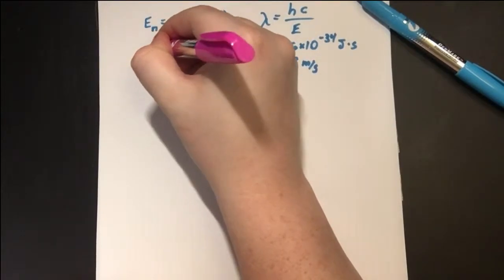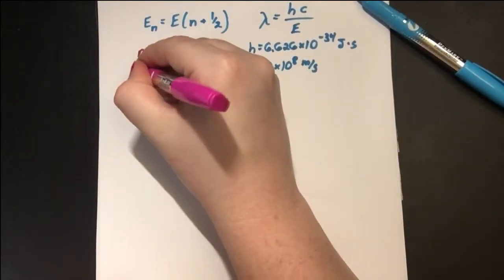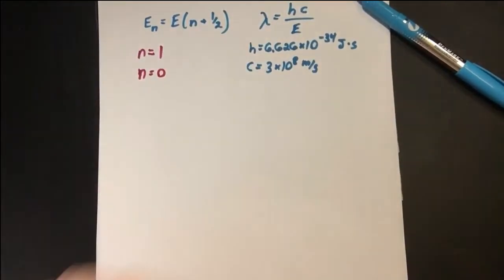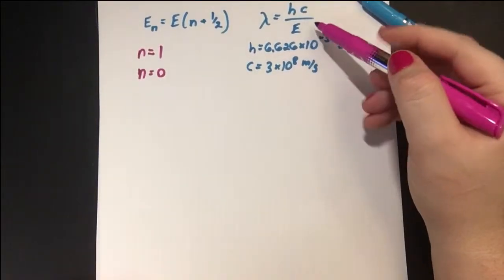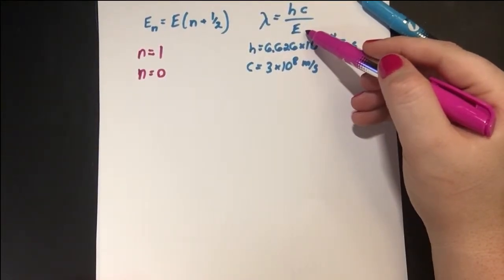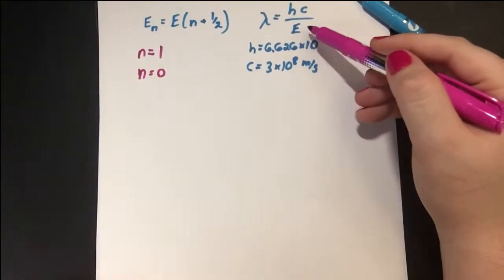So if we want to know what the wavelength is for a nitrogen molecule to decay from its first excited state, that's n = 1, to its ground state, that's n = 0, we want to know the wavelength of that photon. For wavelengths, we need to know the energy that is going into the photon. That's the amount of energy the photon itself has.